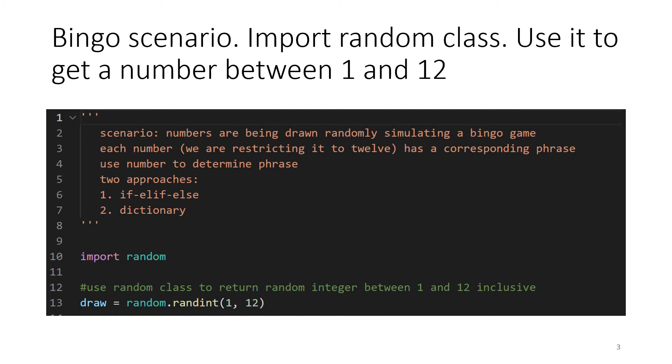Then instead of calling out the number, the bingo caller will call out some phrase based on that number. So we're going to have our computer pick a random number between 1 and 12. Not that bingo sticks to 12, but we're being lazy here. And then we're going to use two different scenarios to go from the number to the phrase that is called.